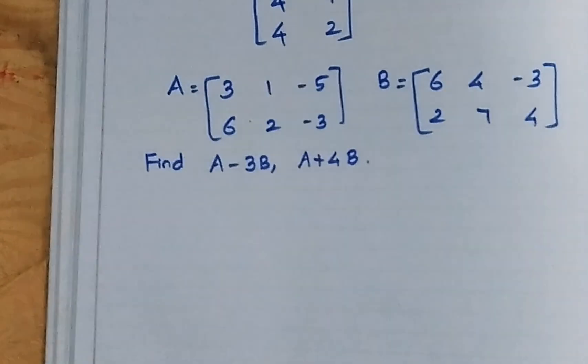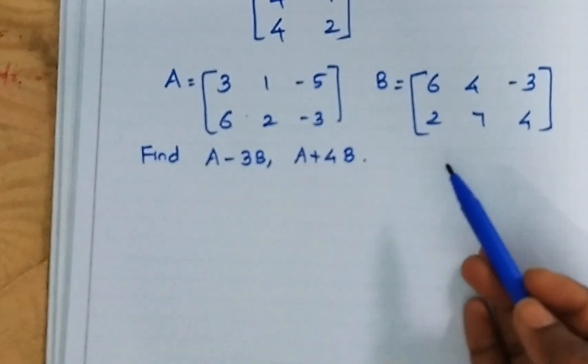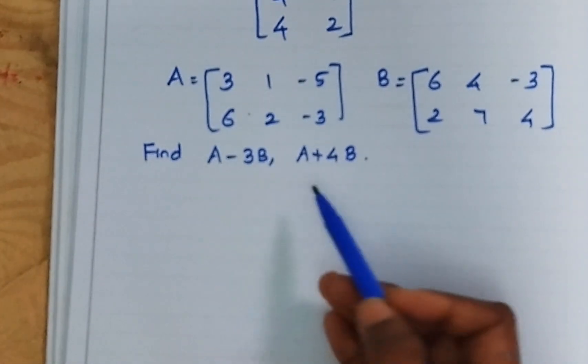Now you can check the matrices named as A and B. We have to find A minus 3B, A plus 4B.